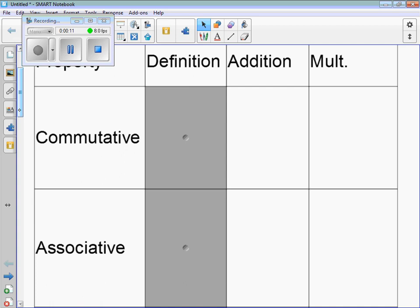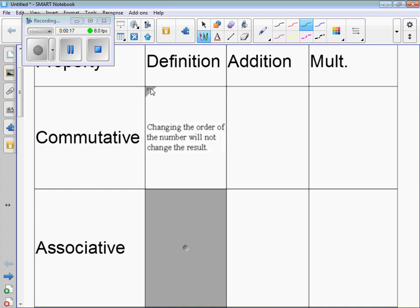Commutative property is the change in the order of numbers that will not change the result. So when we're dealing with imaginary, it's like 5i plus 6i. That's the same thing as 6i plus 5i.